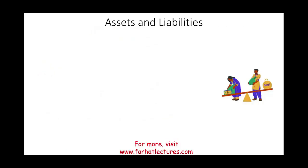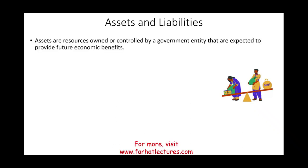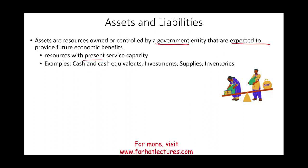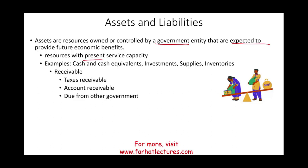Starting with assets and liabilities — we should all be familiar with these terms whether for a government or a business. Assets are resources owned or controlled by the government that are expected to provide future benefit, giving the government the capacity to serve — resources with present service capacity. Examples include cash and cash equivalents, investments, supplies, inventories, receivables such as taxes receivable, accounts receivable, and amounts due from other governments.